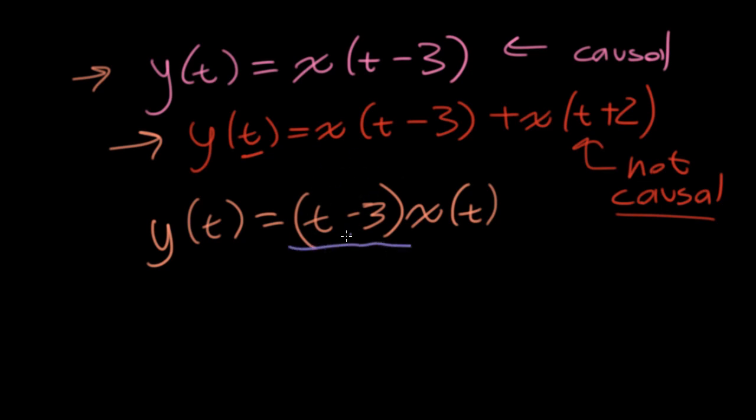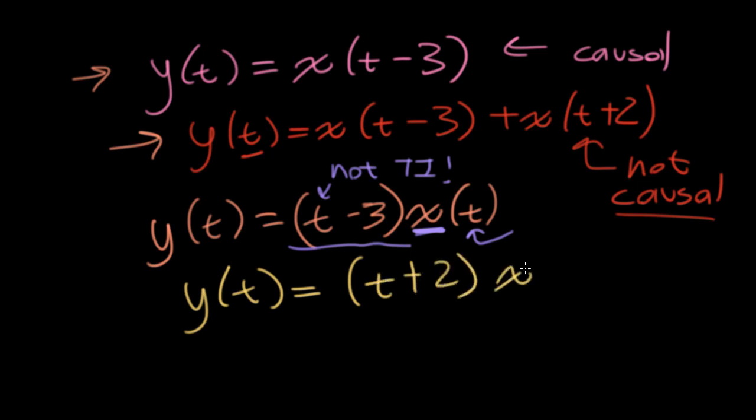The fact that there's a t in front of here is irrelevant. This system will be linear. It will not be time invariant. It does not get to wear the top hat of time invariance because there's a t sitting outside here. But this doesn't affect the causality at all.